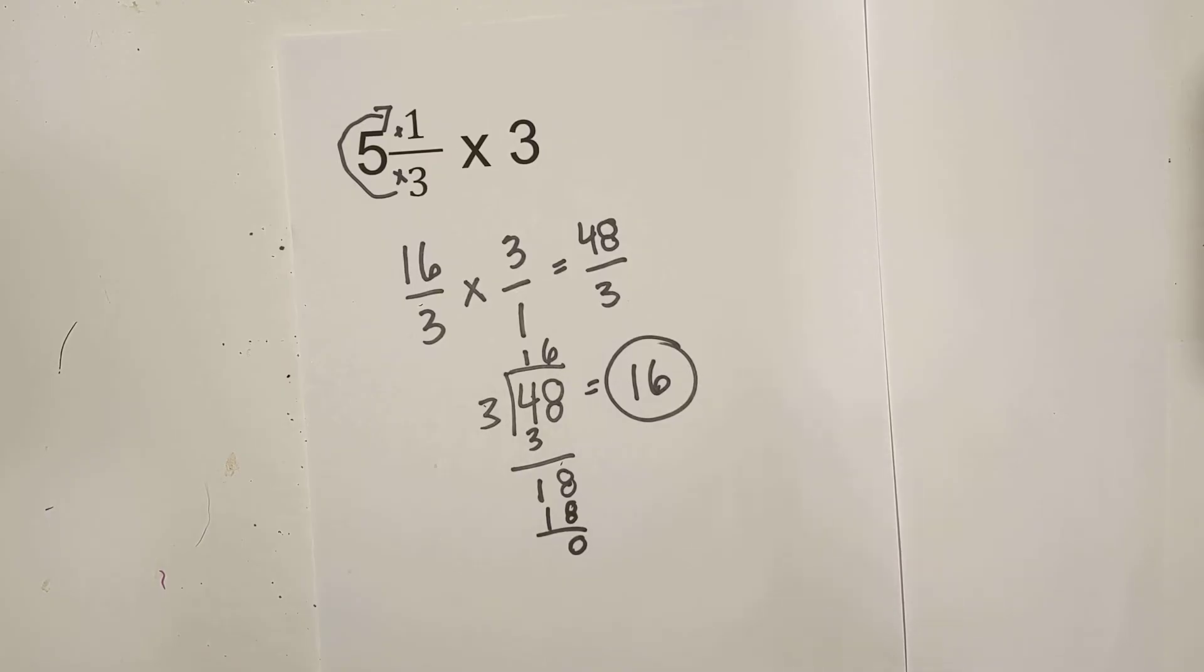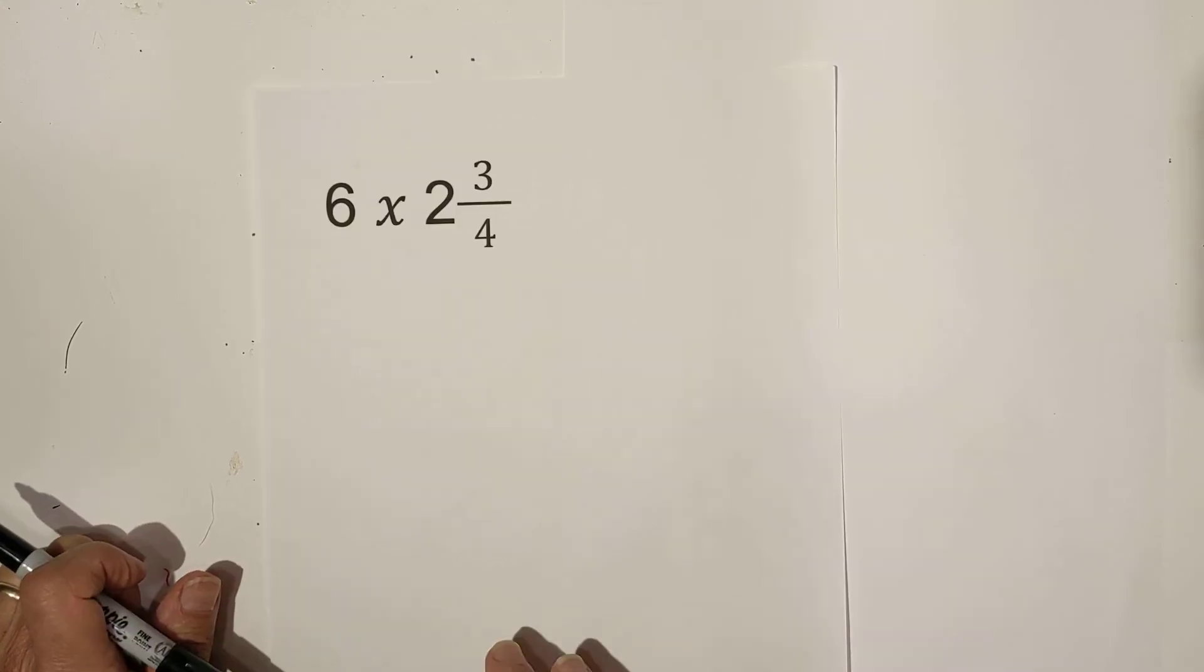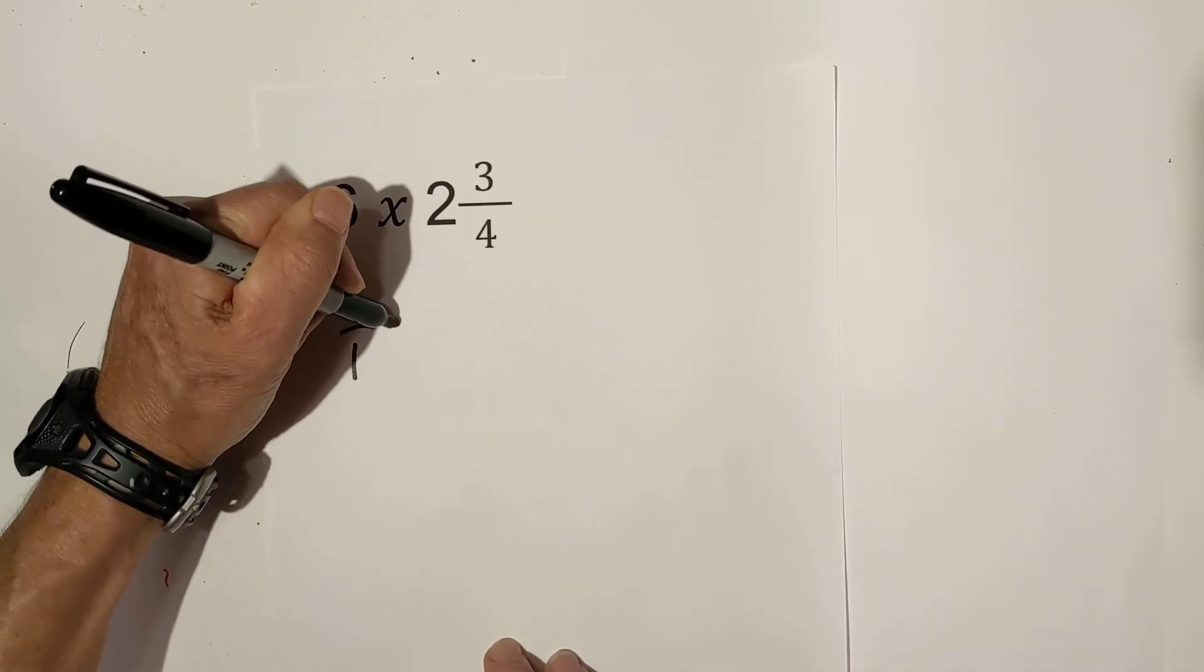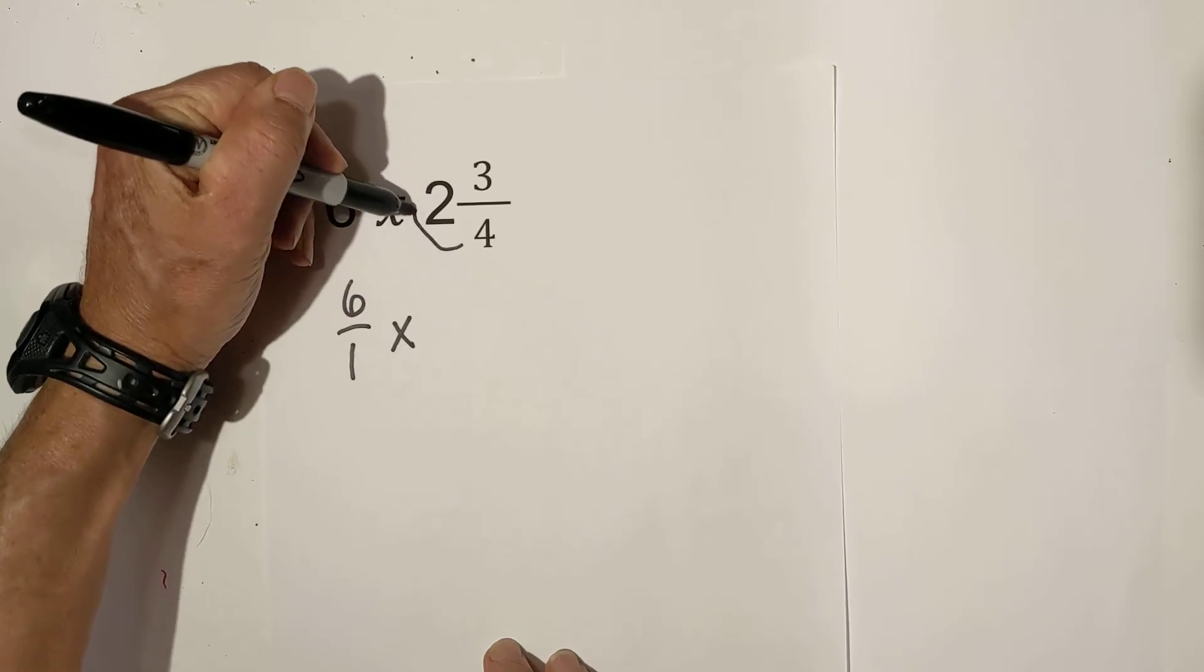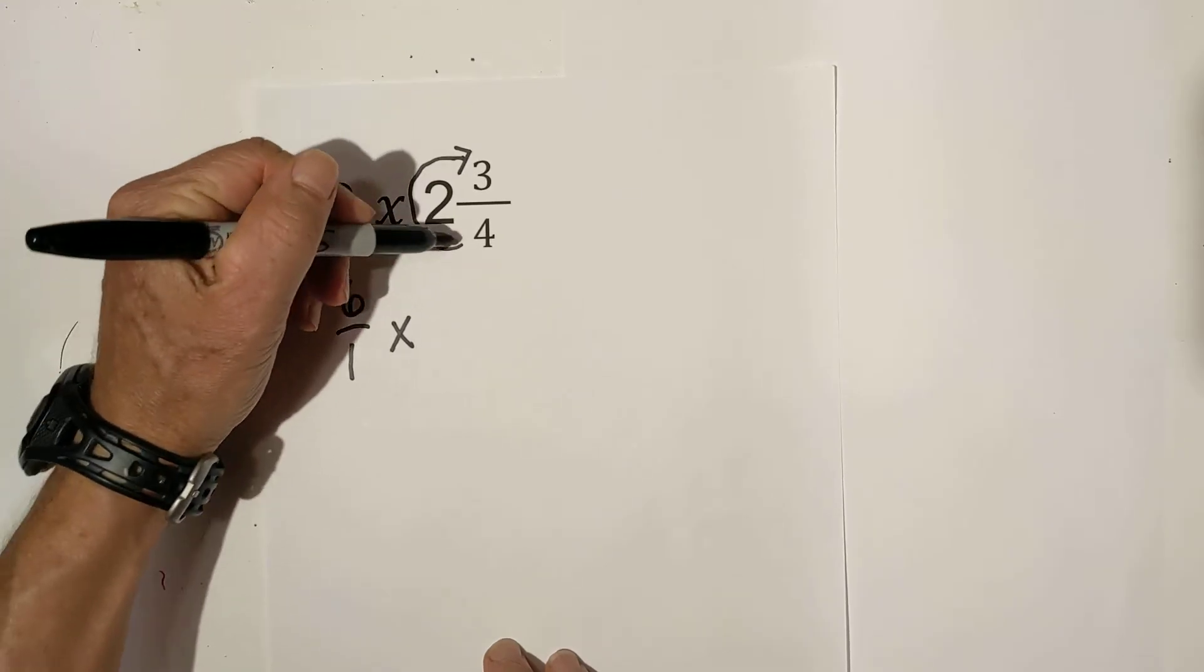And let's work our final problem. And now we're on our last one. This is 6 over 1 times. Remember, we're converting it into an improper fraction.